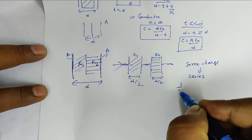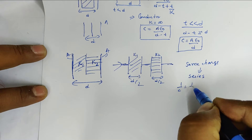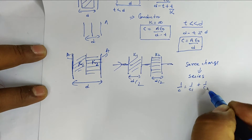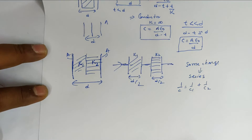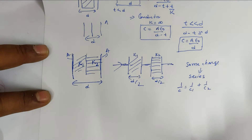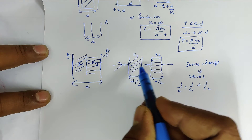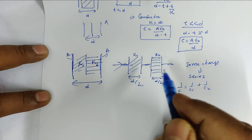Since the two capacitors are in series, we use: 1/C = 1/C1 + 1/C2.